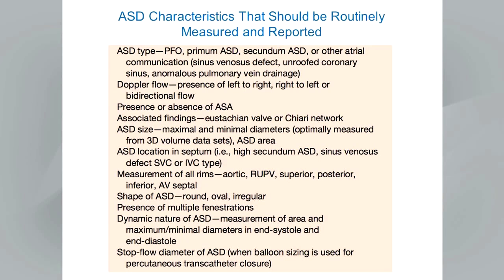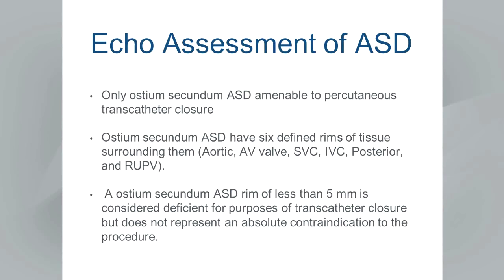We want to measure all six rims of surrounding tissue — the aortic, right upper pulmonary vein, superior, posterior, inferior, and AV septal rims — in multiple views, sweeping through the plane to capture maximum and minimum dimensions. We note the shape of the ASD using 3D imaging: round, oval, irregular, or multiple. We also note the dynamic nature of the defect by measuring area and maximum/minimum diameters in both systole and diastole. During transcatheter closure, we perform a stop-flow diameter with balloon sizing using color Doppler to look for cessation of flow.